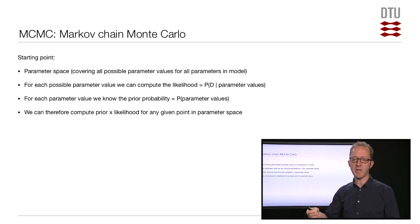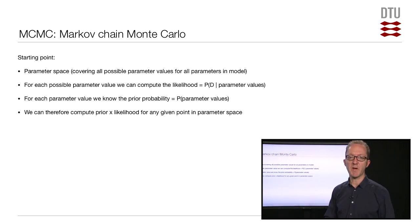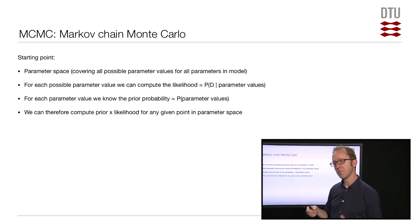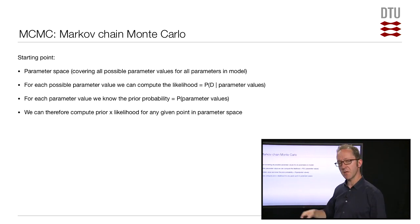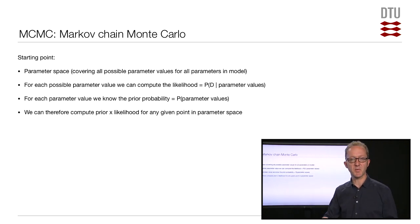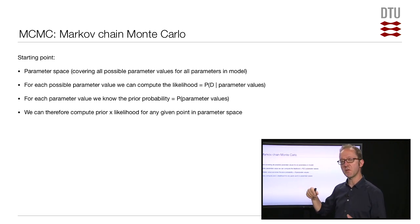The starting point for MCMC is a parameter space — the space covering all possible combinations of values for all your parameters. For any given point in that space, you can compute the likelihood. In a simple coin-tossing example, for any possible value of p, you can compute the probability of the data you've seen. In a phylogenetic example, for any possible value of nucleotide frequencies and branch lengths, you can compute the probability of your alignment.